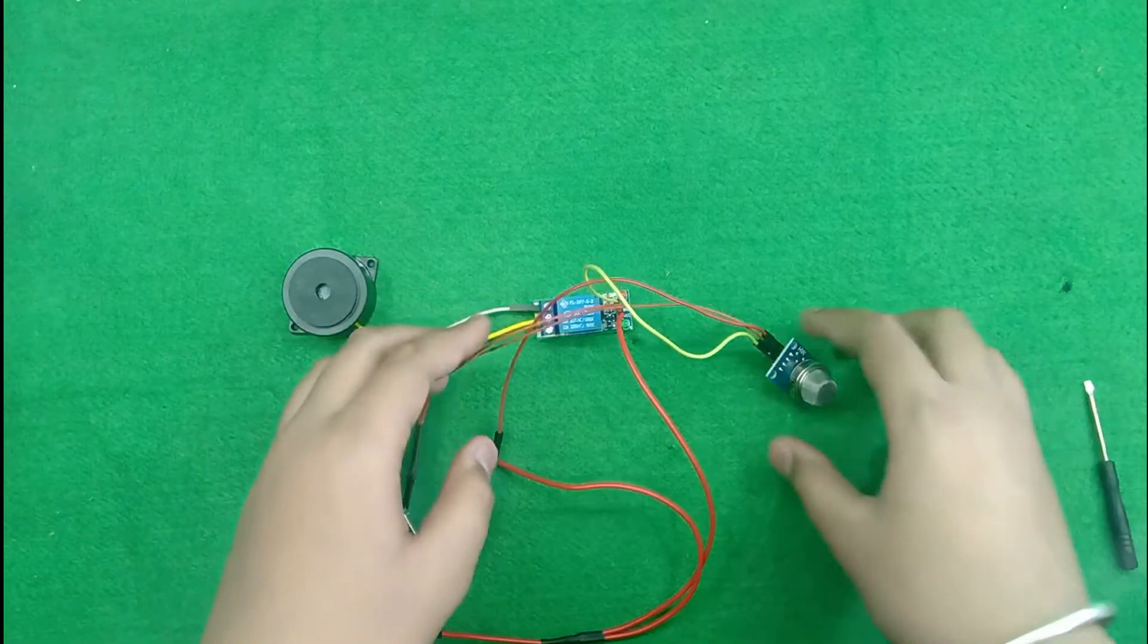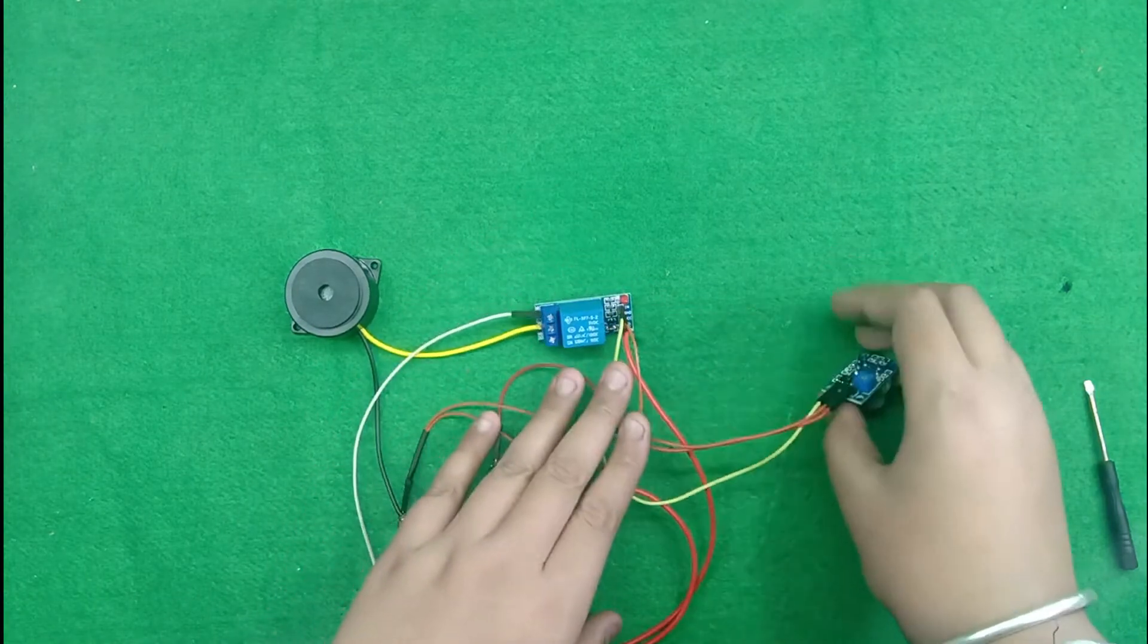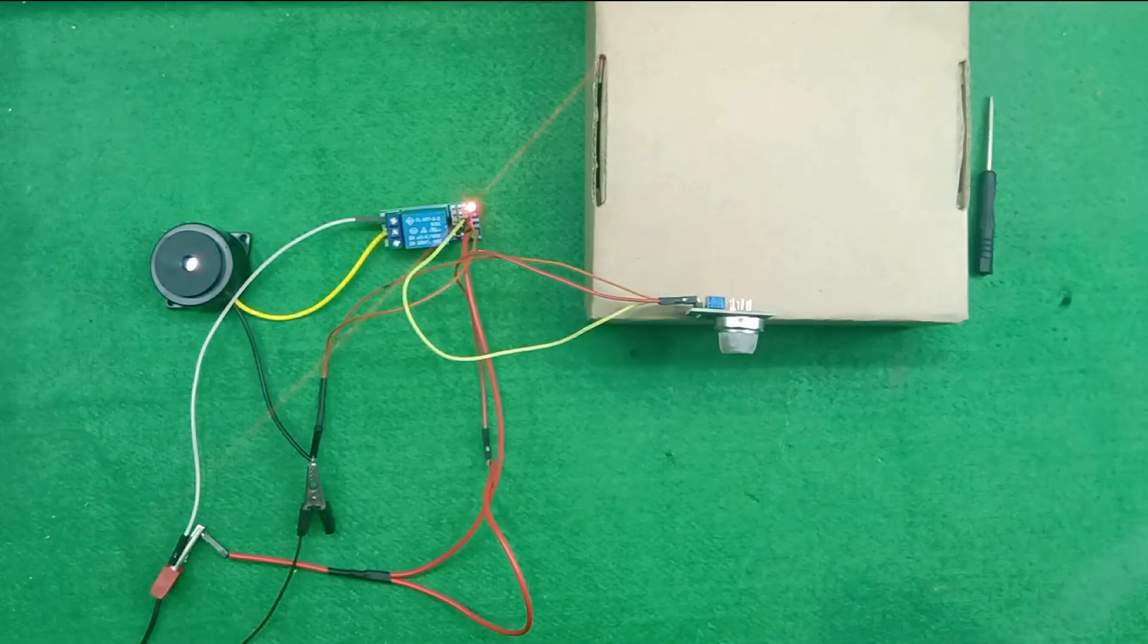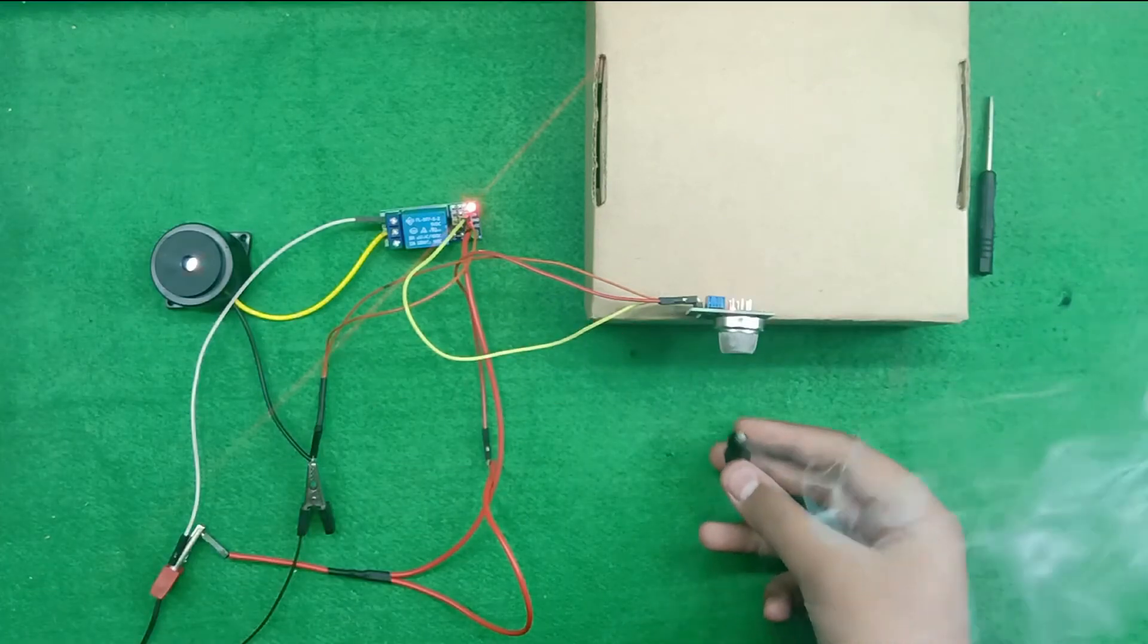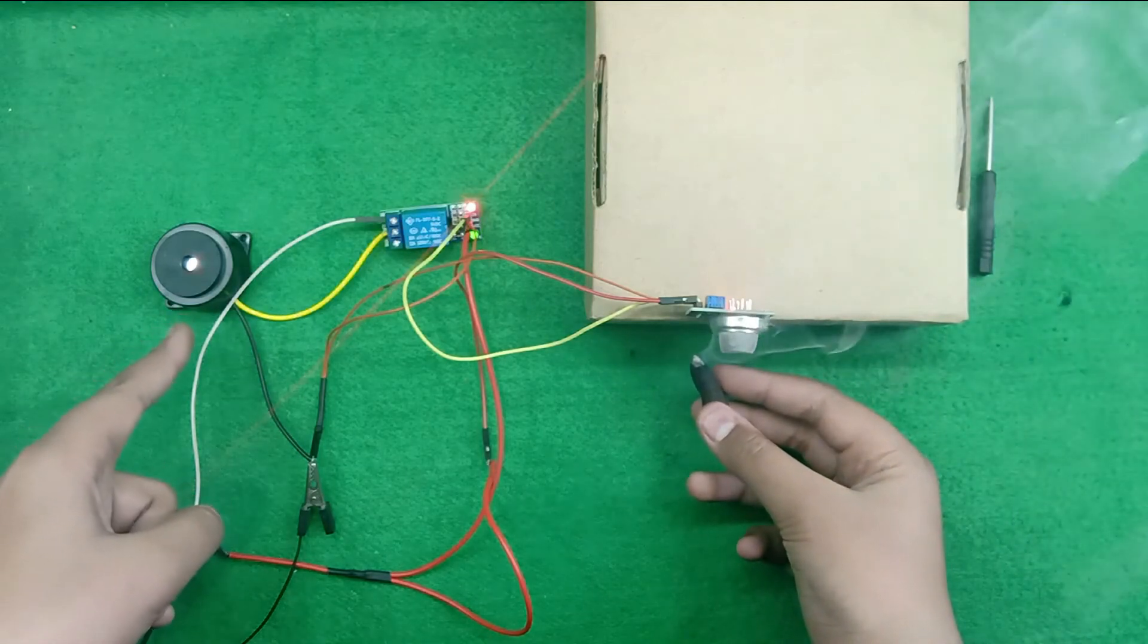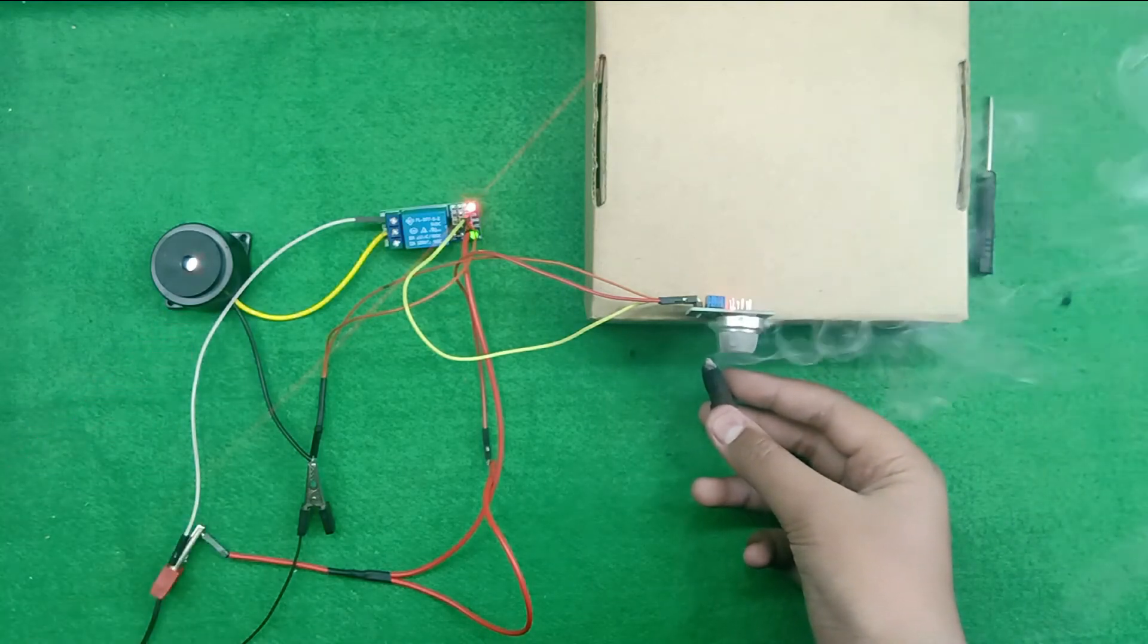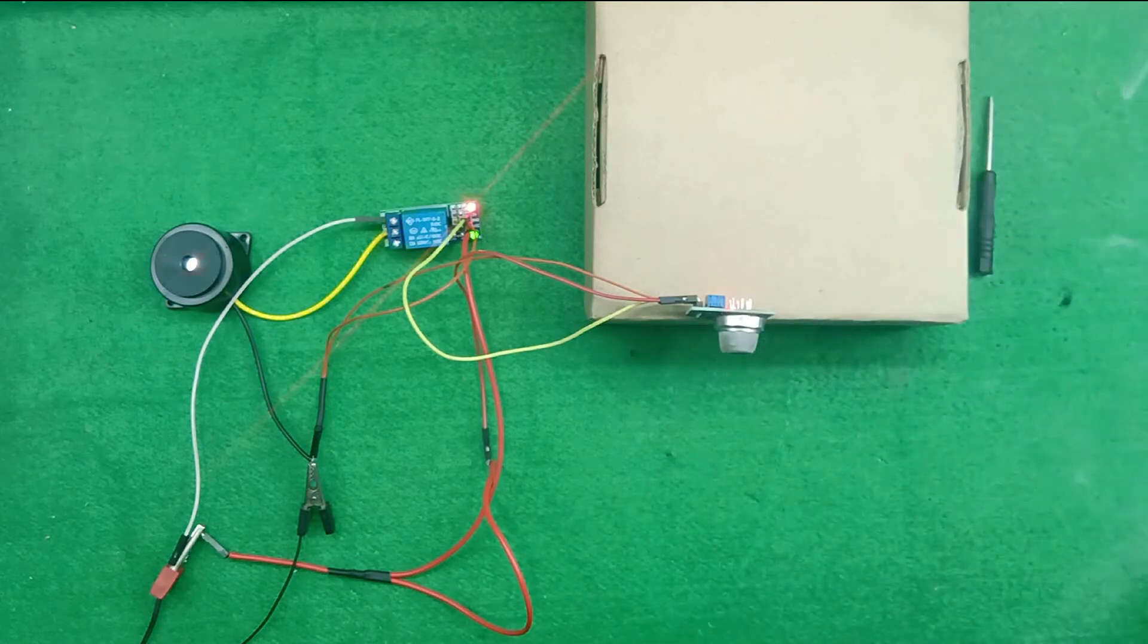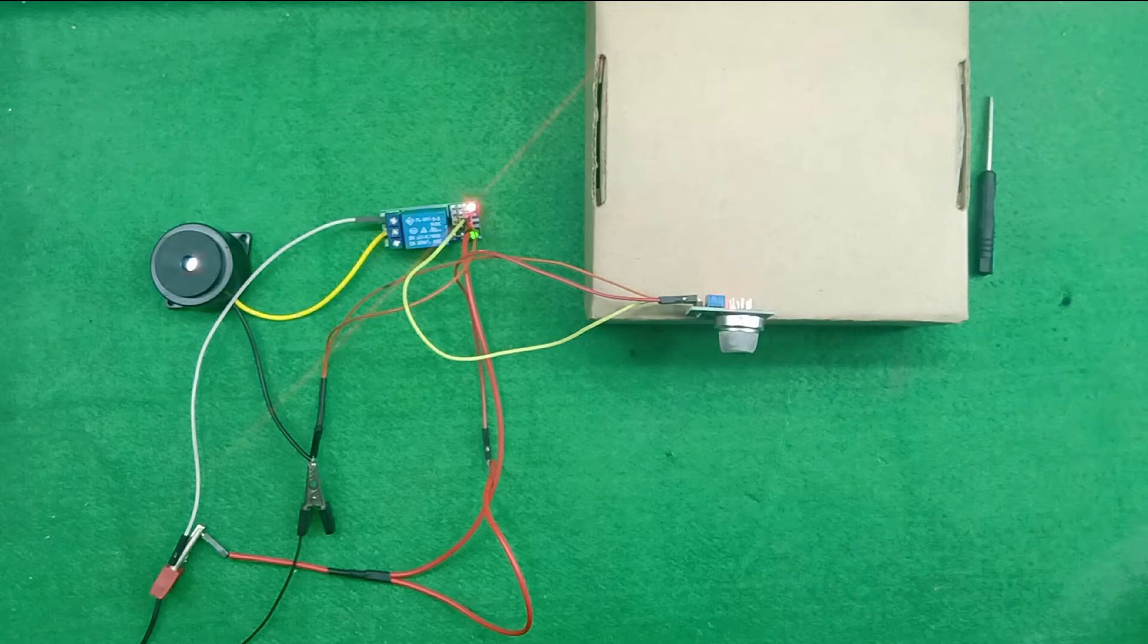Now, let's see how it works. I place the smoke under the MQ sensor. Then, the buzzer is active now. And when I take off the smoke, the buzzer will automatically stop.